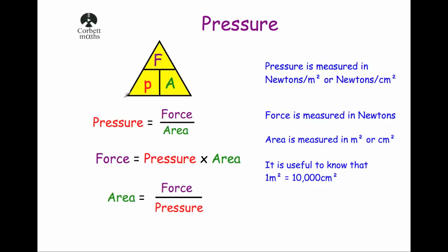Pressure is calculated by dividing the force by the area: pressure is equal to force divided by area. If you look at this triangle — you may have seen these on speed, distance, time, or density — if you cover up the P, you've got force over area, so force divided by area.